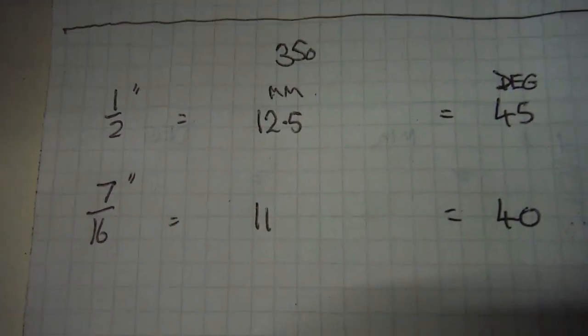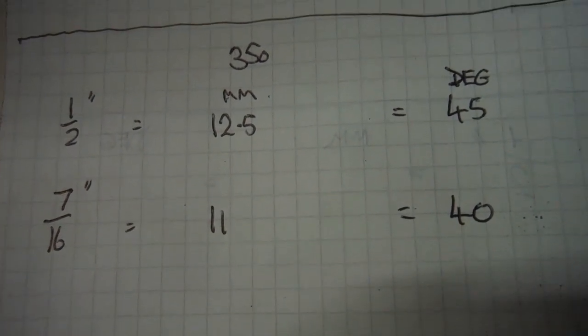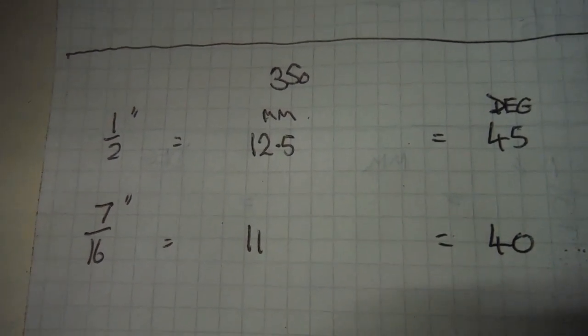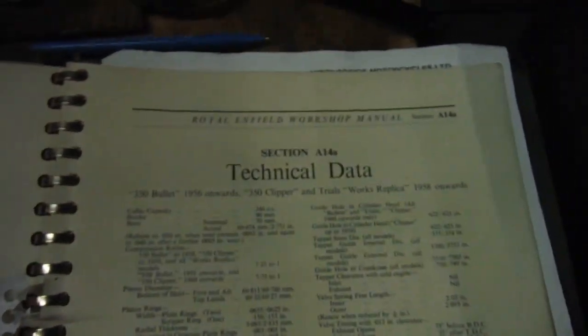I've already done it in steps and adjustments of the dial gauge position over the piston, and I've been able to determine that the half inch or 12.5 millimeter figure is 45 degrees before top dead center. Seven-sixteenths or 11 millimeter figure is 40 degrees before top dead center. So the 350 runs five to ten degrees more advanced than the 500 according to the Redditch technical information.